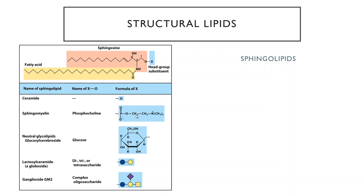A phosphocholine group — the same phosphocholine found in phosphatidylcholine — added on forms something called sphingomyelin. A glucose or sugar molecule added forms a glucosyl cerebrocyte. You can also add other more complex sugars, forming lots of different molecules by adding different substituents at that head group.